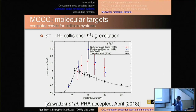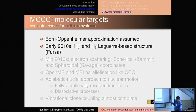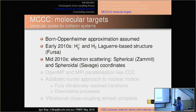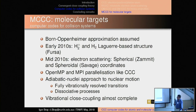The molecular code history: we assume the Born-Oppenheimer approximation at all times and don't move away from that. In the early 2010s, H2+ and H2 — the Laguerre-based structure was developed by Vinton Fursa. Then we had wonderful students: Mark Zammit, now on staff at Los Alamos National Lab. We have both a spherical coordinate system approach and a spheroidal approach, particularly important for diatomics. OpenMP and MPI parallelization followed the work I developed for CCC. We have an adiabatic nuclear approach to nuclear motion, so we can do fully vibration-resolved transitions, dissociative processes, and vibrational close-coupling is almost complete — still under development.